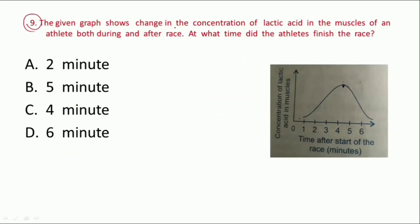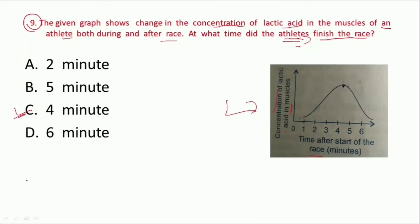This is Question 9: The given graph shows changing concentration of lactic acid in the muscles of an athlete, both during and after the race. At what time did the athlete finish the race? Is figure mein lactic acid ki concentration di gayi hai muscles ke andar, aur time after start of the race bhi diya gaya hai. The athlete will finish the race at about 4 minutes. Answer hoga option C. At about 4 minutes, yahan par lactic acid ki concentration maximum hai muscles ke andar.